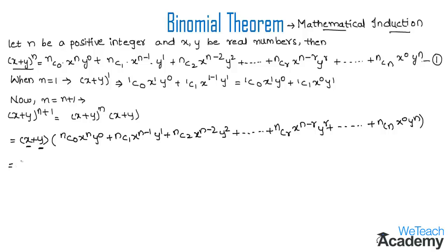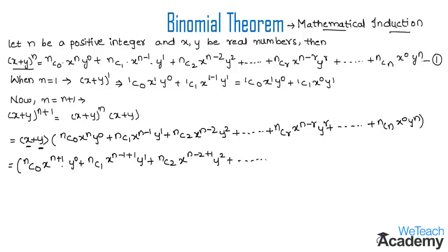Multiplying x with the group: nC0 · x^(n+1) · y^0 + nC1 · x^(n-1+1) · y^1 + nC2 · x^(n-2+1) · y^2 + ... + nCr · x^(n-r+1) · y^r + ... + nCn · x^1 · y^n. Now let us multiply y with this whole group.